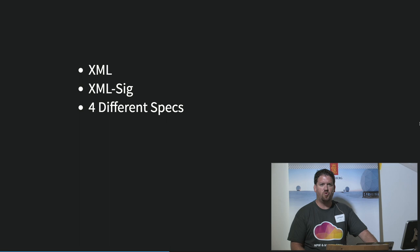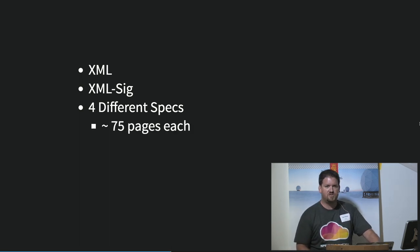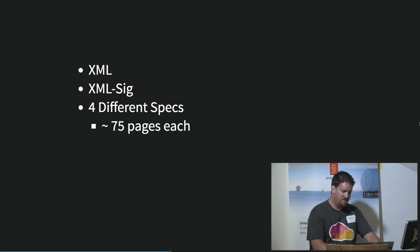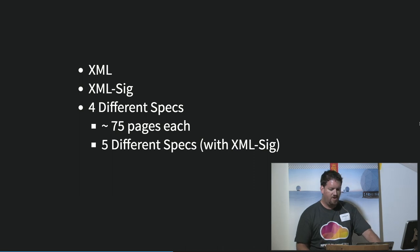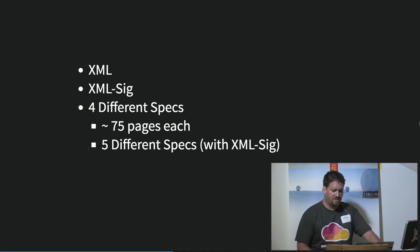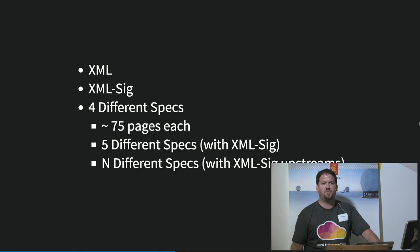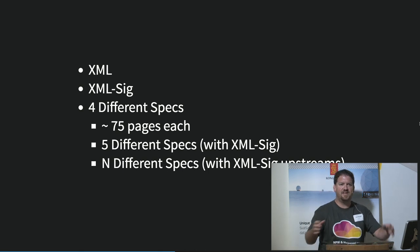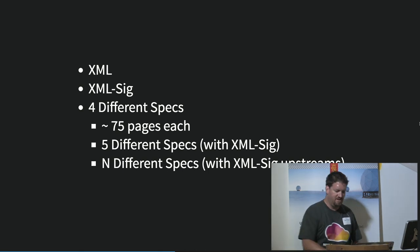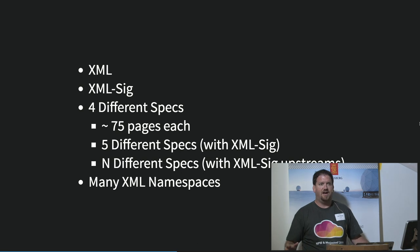SAML comes in four different specs, each of them about 75 pages long. Actually there are five specs, because you have to put an XML SIG in it. Actually, there are like N specs, because XML SIG pulls in a bunch of other things — and lots and lots of XML namespaces.